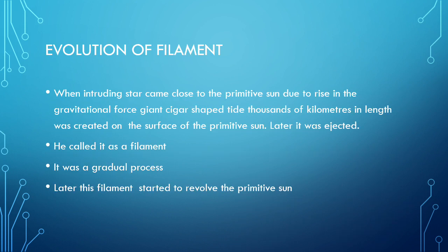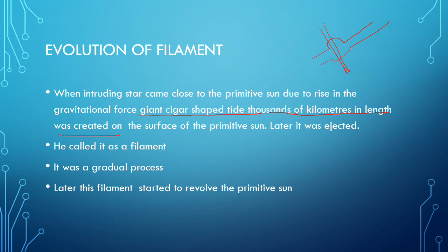In this theory, a filament evolved during this process — a cigar-shaped filament formed, with the middle portion slightly bulged. When the intruding star came close to the primitive sun, due to the rise in gravitational force, a giant cigar-shaped tide thousands of kilometers in length was created on the surface of the primitive sun and later ejected. This filament was so large it looked like a single filament, and it was a gradual process — it did not happen suddenly.